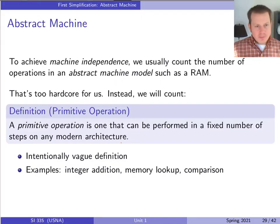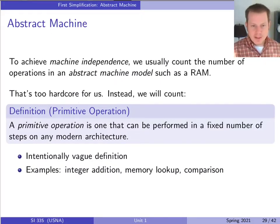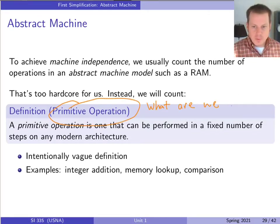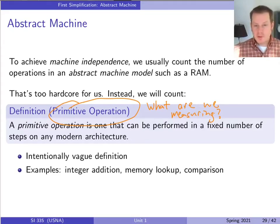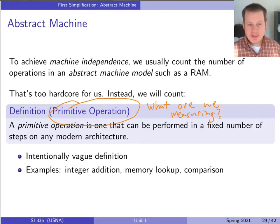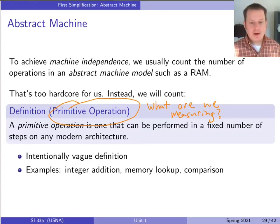So the first simplification is: what are we measuring? When we do analysis of runtime, most of the time we refer to what's called a primitive operation. A primitive operation is something that can be performed in a fixed number of steps on any modern architecture.